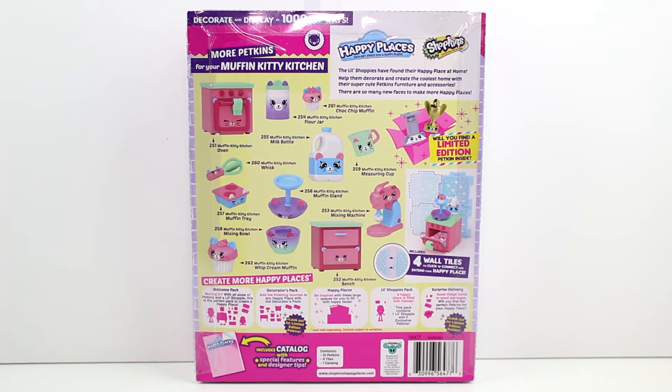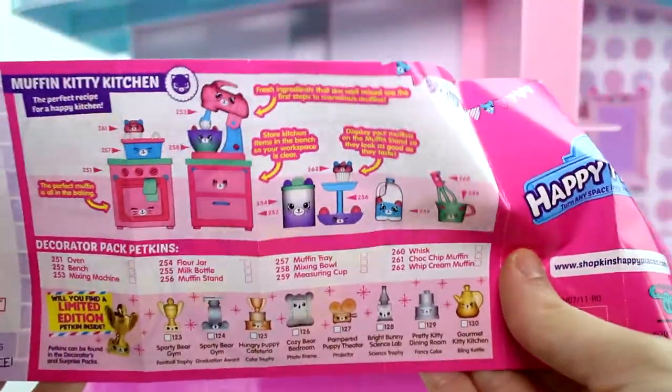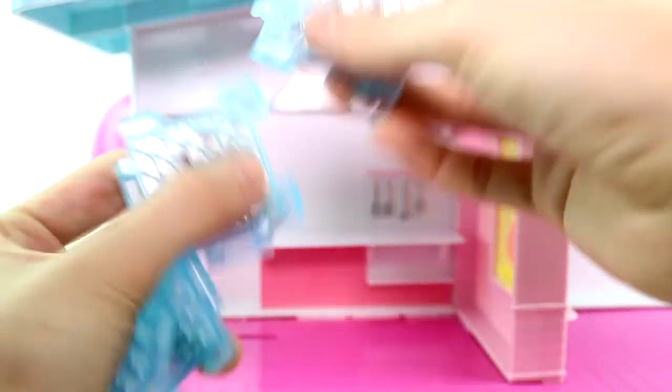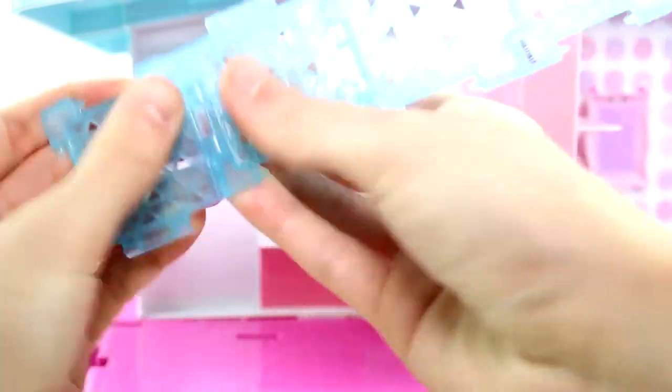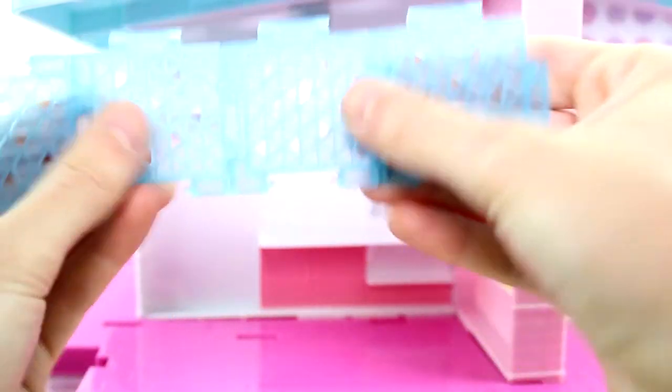So let's go ahead and get these out of the pack and we can put them in our mansion. Inside the pack you get a checklist so here are all the little friends that you can get inside. And then here's just other packs that you can collect, super fun. You do get four wall tiles. So let's go ahead and I'm just going to make them into a square because that's what I've been doing every time. We're going to make like a little separation. There we go.